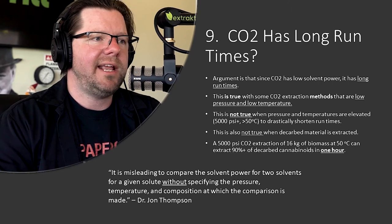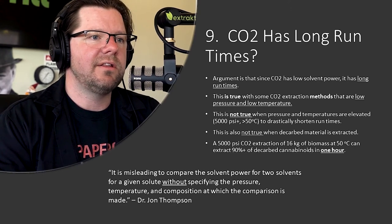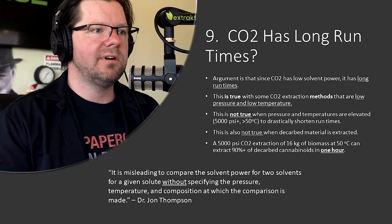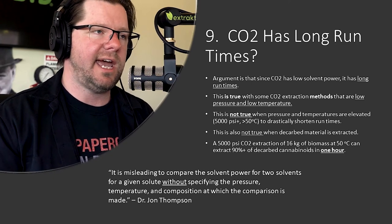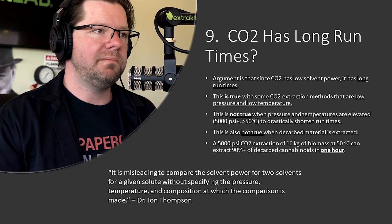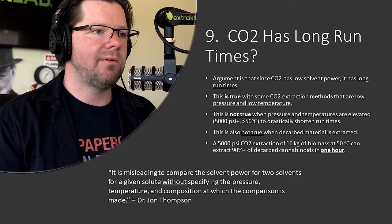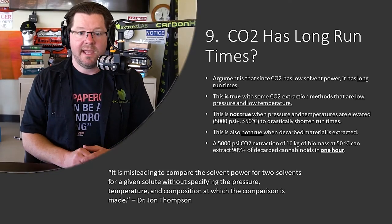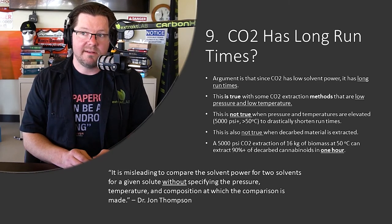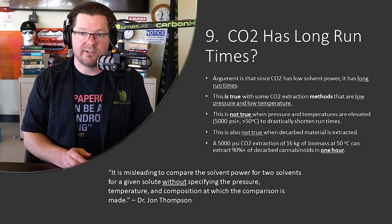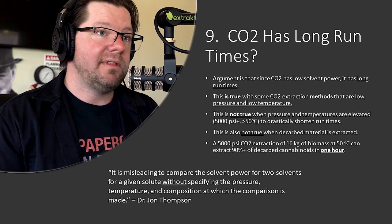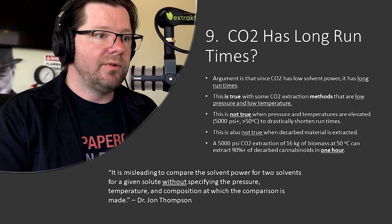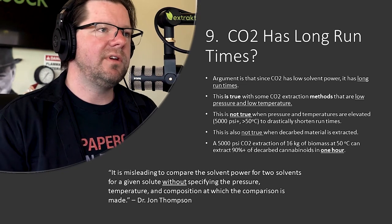Number 9: CO2 has long run times. This argument is predicated on low solvent power. Historically, CO2 has been run at low pressures and in those conditions it's pretty slow — typically run times of four to six hours depending on your pressure and temperature. Under certain circumstances those longer methods are quite desirable, for example when you want to selectively extract terpenes. You can't really do that with ethanol.